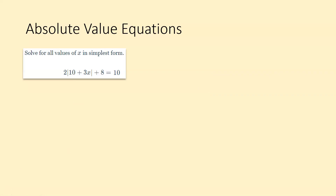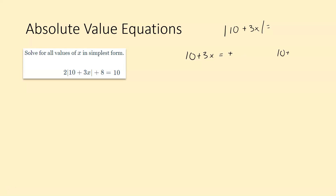So these are a little trickier. What you want to do is make sure you get the absolute value solved by itself on one side of the equation first. So we want to get to the absolute value of 10 plus 3x equals something over here. Once we do that, then we can split it into two equations with 10 plus 3x equaling the positive thing and the negative thing. But first, we have to get rid of the things outside of the absolute value.